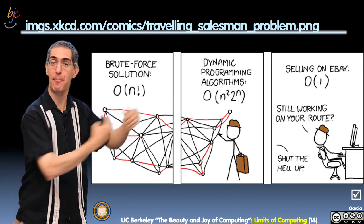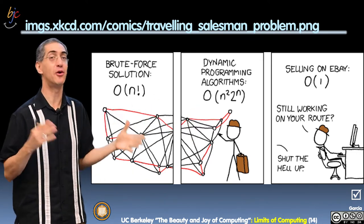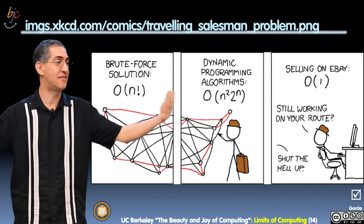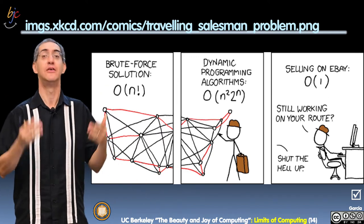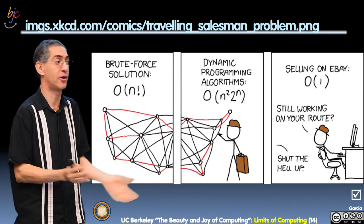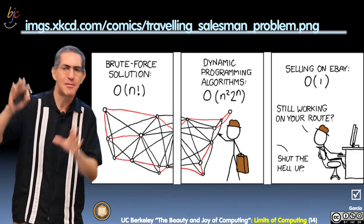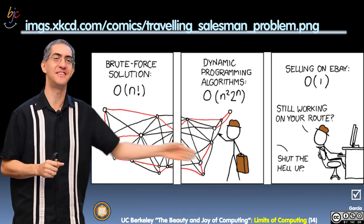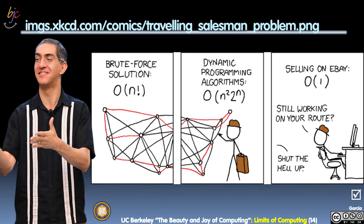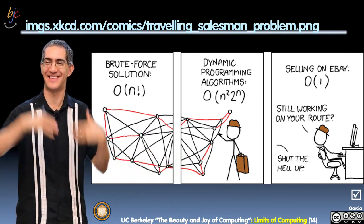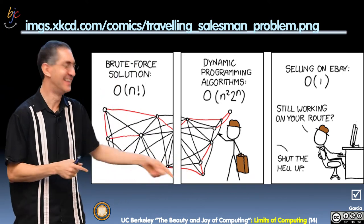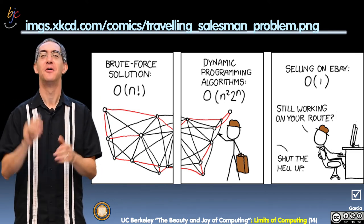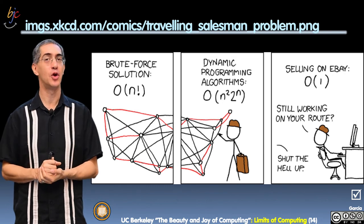Here's the map graph talking about traveling salesman. The brute force solution randomly choosing permutations — the number of permutations of visiting N cities is N factorial. So the order of growth is O(N!). There's also a dynamic programming algorithm that has some trouble too. Versus selling on eBay: order of 1, which means constant — you don't have to do any search at all, just sell on eBay. The cartoon guy is still working on the roof. All right, we're done, and now we're going to do the last one on decidability.